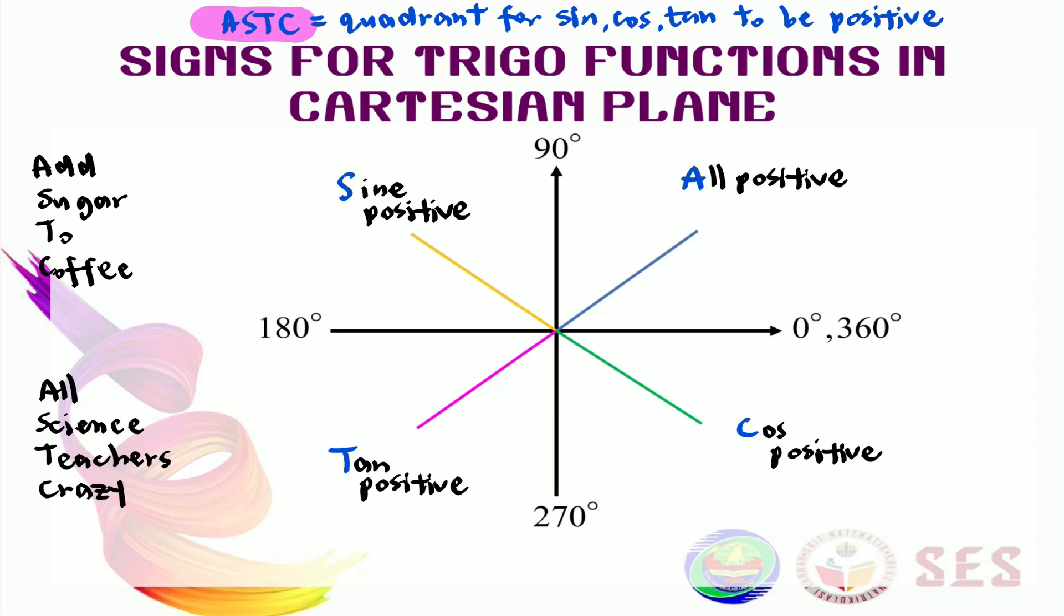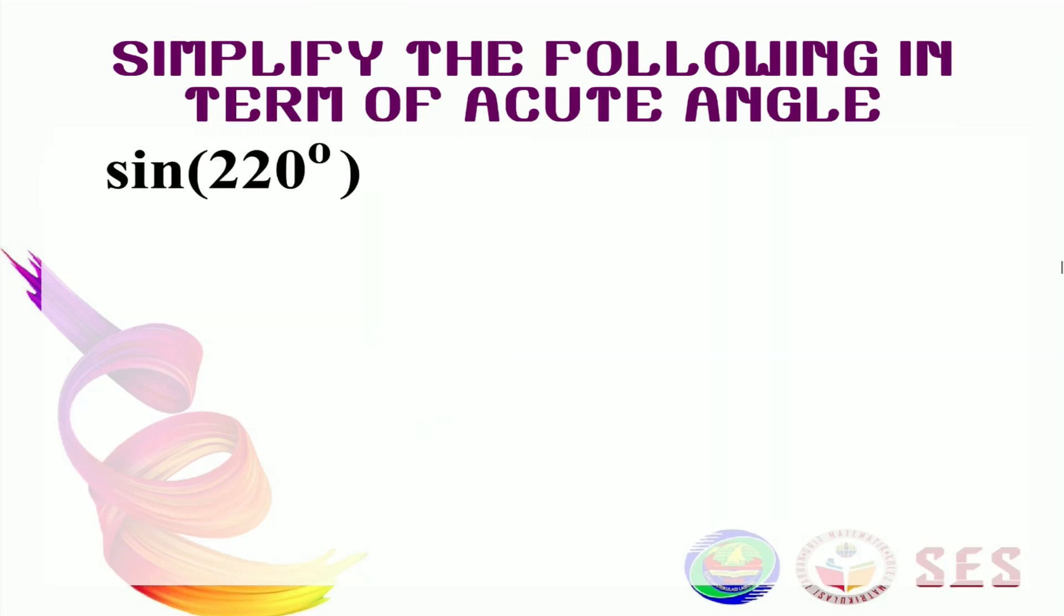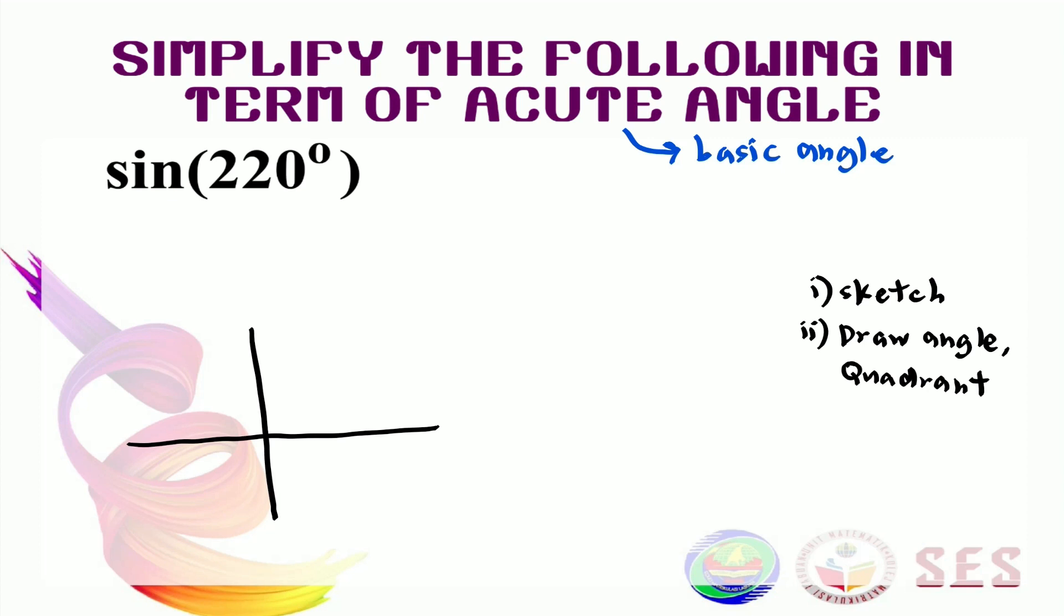Now, let's get to the objectives of this video, to determine trigonometric functions for any angle. Let's see some questions. We want to simplify sine 220 in terms of acute angle. On another word, we want to simplify this into its basic angle. The first thing to do is to sketch its Cartesian plane, like this. The second one is to draw its angle and determine its quadrant. We know that 220 degrees is here in the third quadrant.